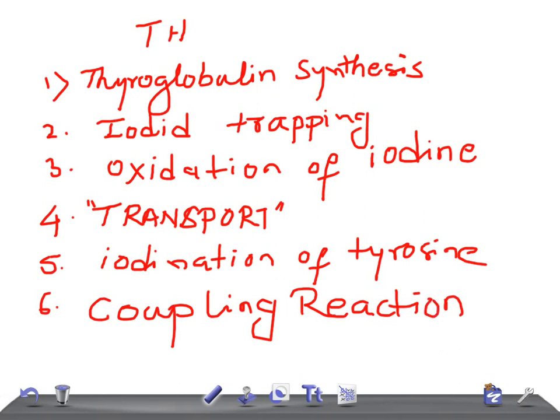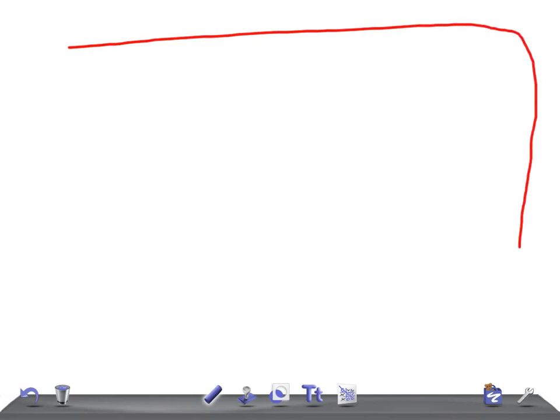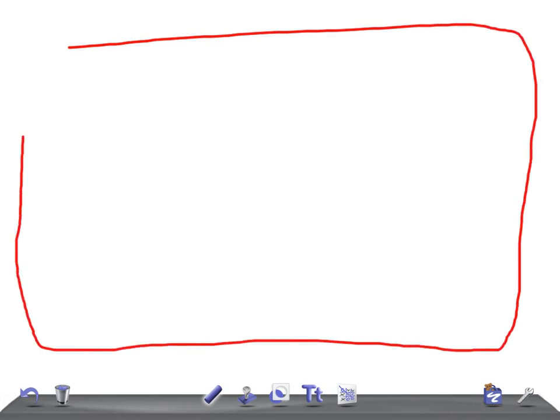So these are the stages of synthesis of thyroid hormones: first, thyroglobulin synthesis; second, iodide trapping; third, oxidation of iodine; fourth, transport of iodine into the follicular cavity; fifth, iodination of tyrosine; and sixth, the coupling reactions. Let's start with stage one — try to concentrate because I have simplified this.